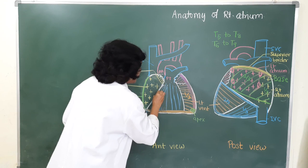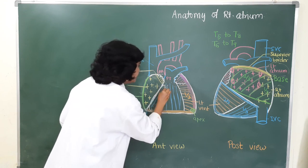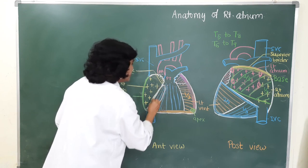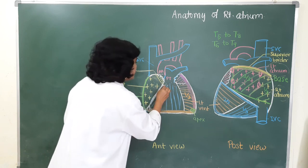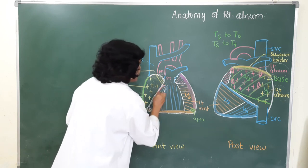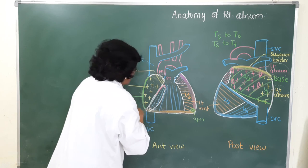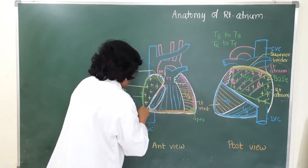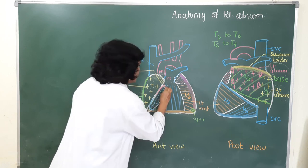The right auricle overlaps the root of the ascending aorta and the infundibulum of the right ventricle. Blood enters from the right atrium into the right ventricle through the right atrioventricular orifice, which is guarded by three cusps: the anterior cusp, posterior cusp, and septal cusp.